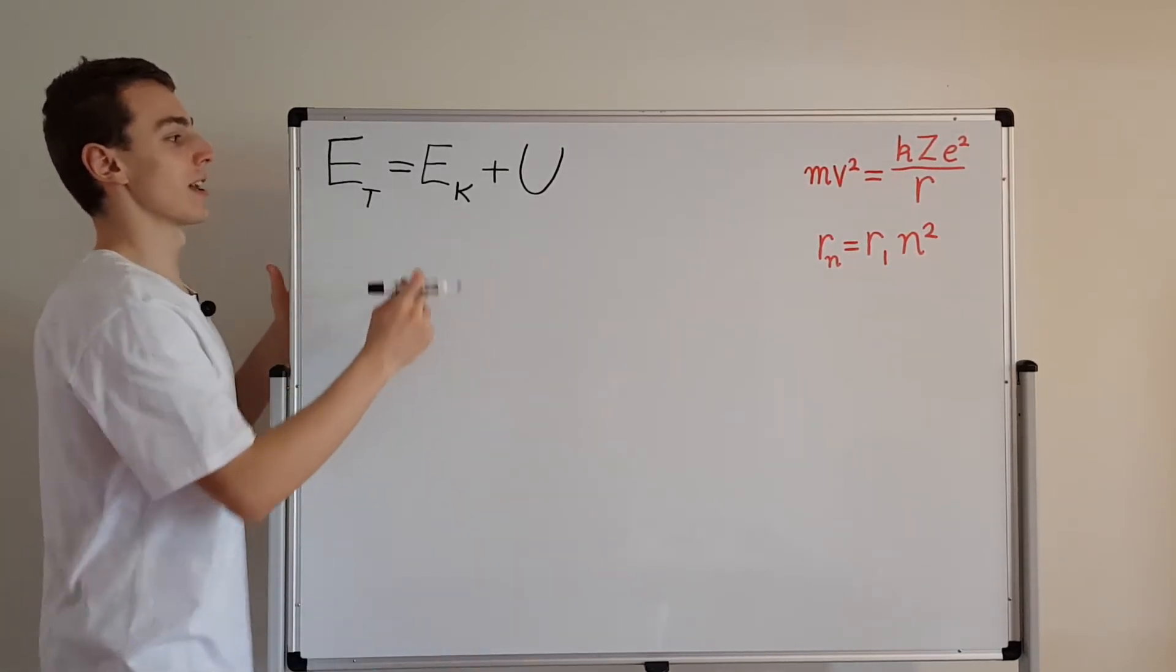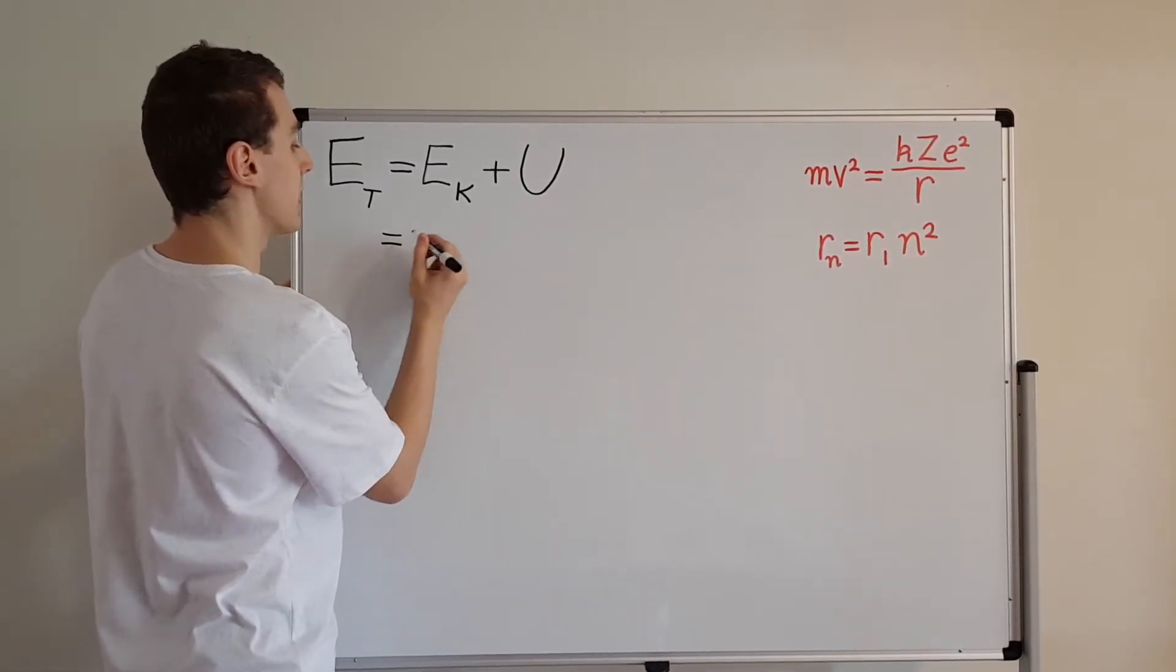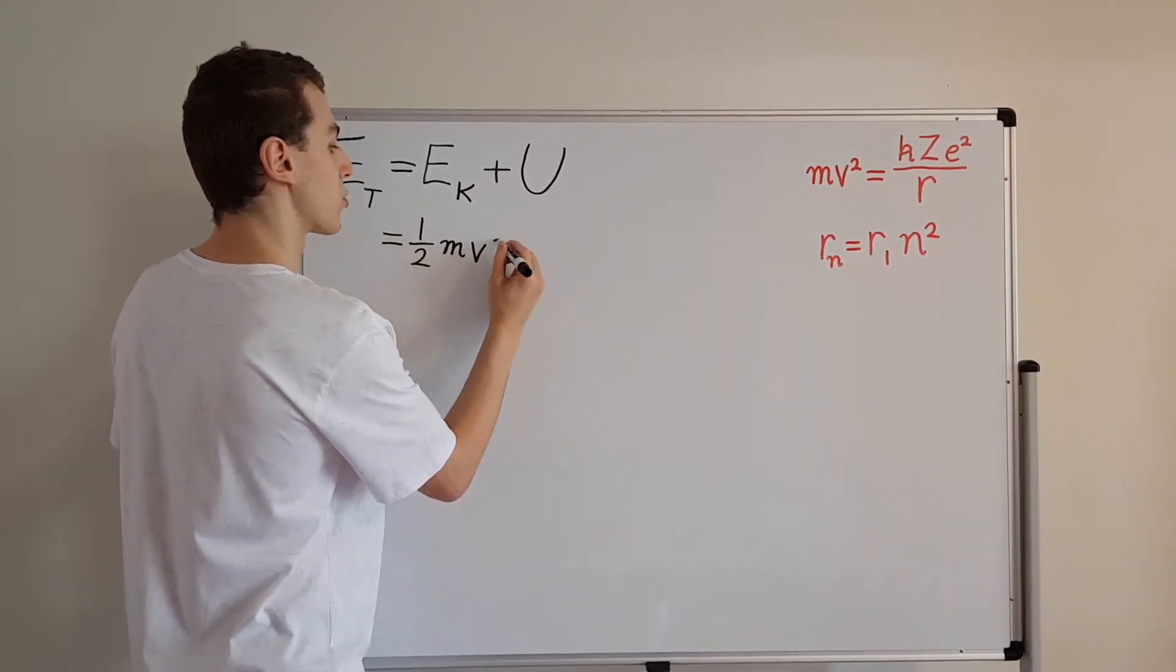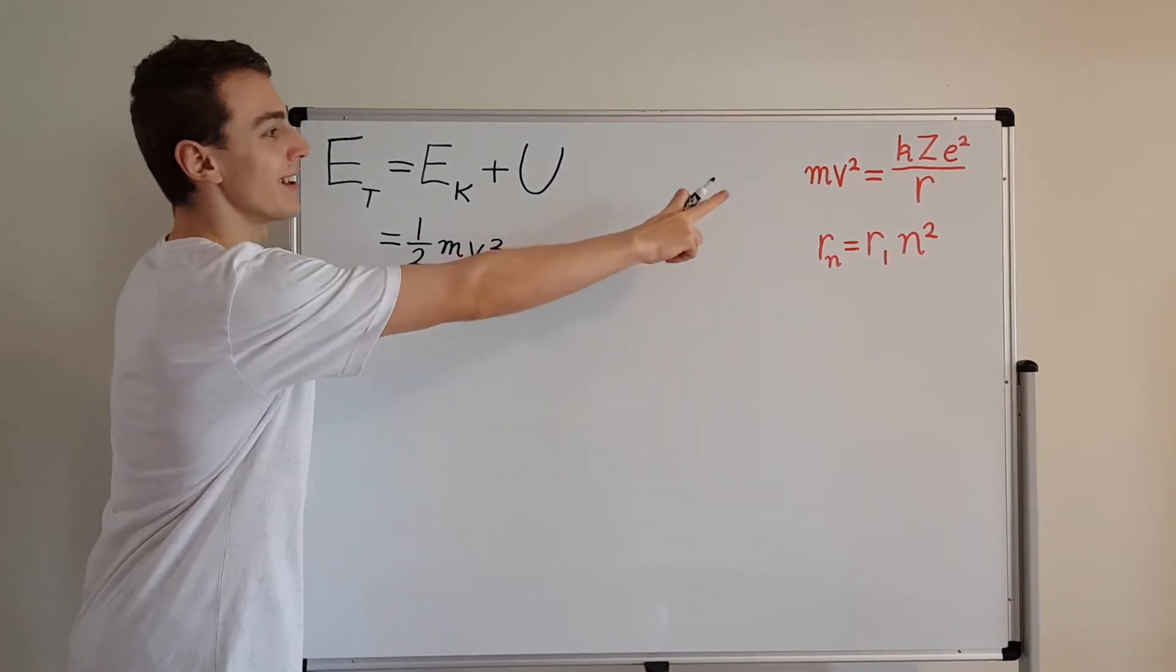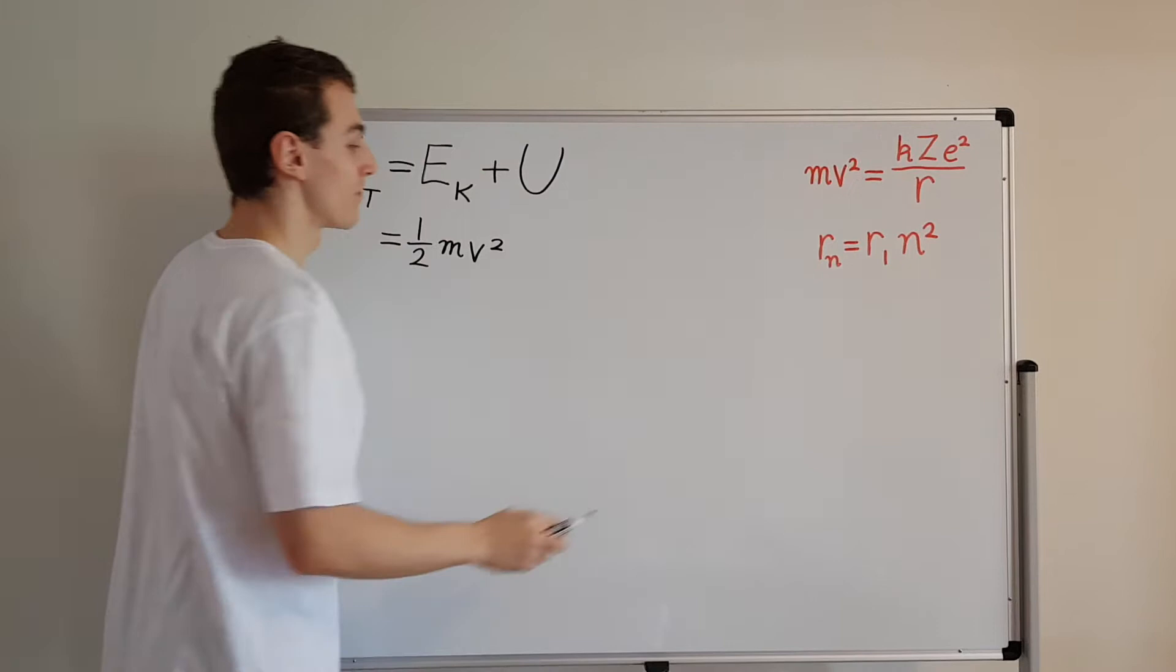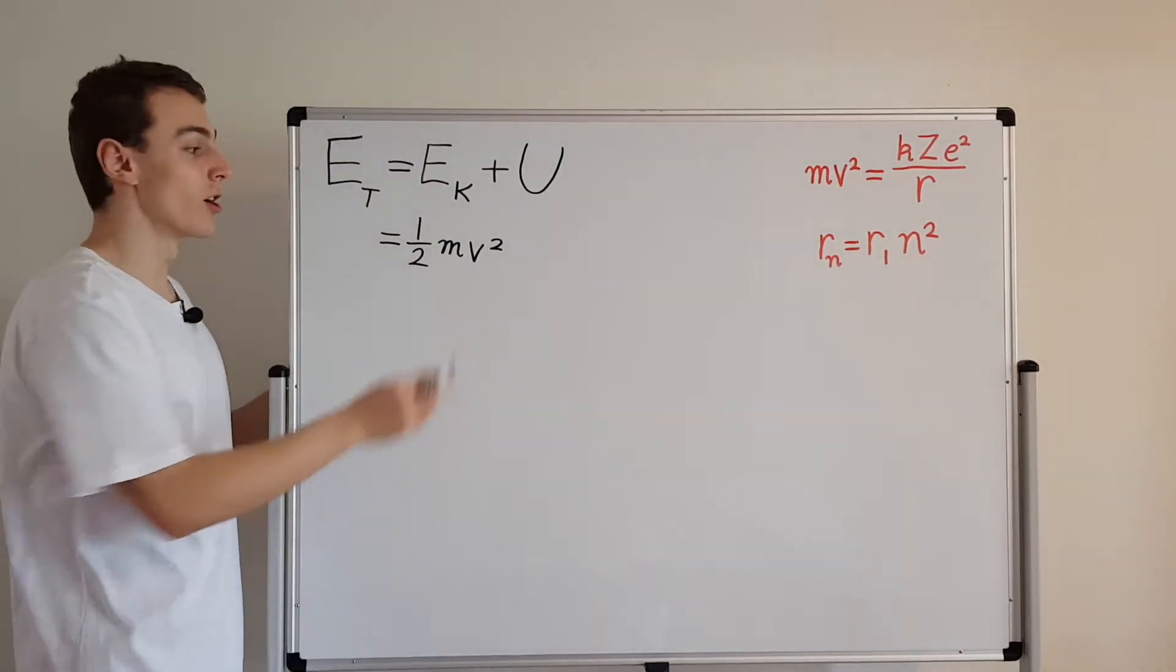How can we write the kinetic energy? Well, the kinetic energy is one-half mv squared. And what do we see on this side? We see an mv squared. You can see that that's the reason I wrote this up, because we're going to have to substitute it in over here.